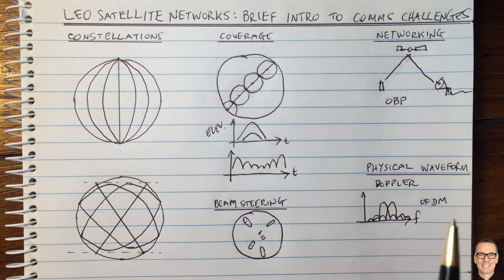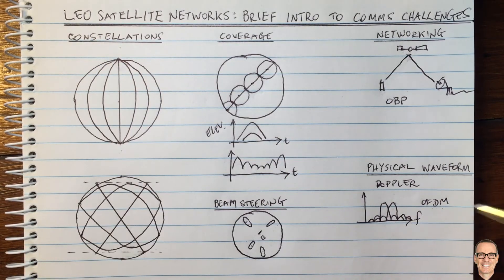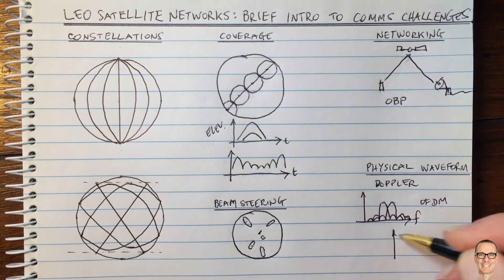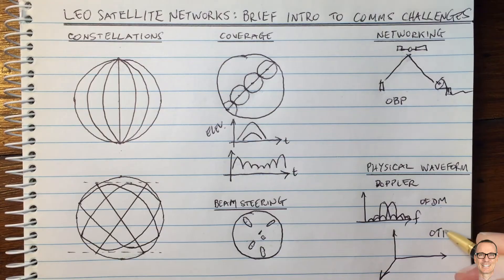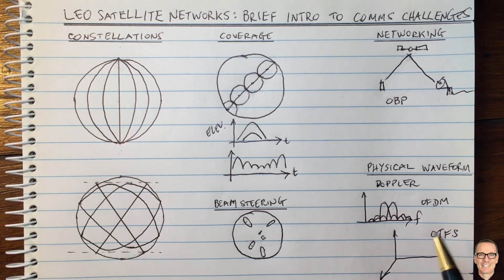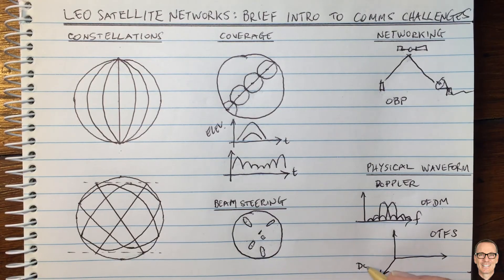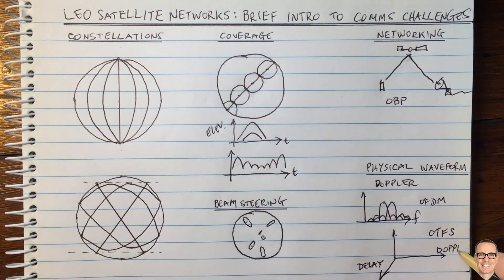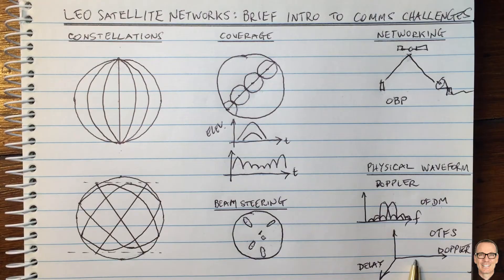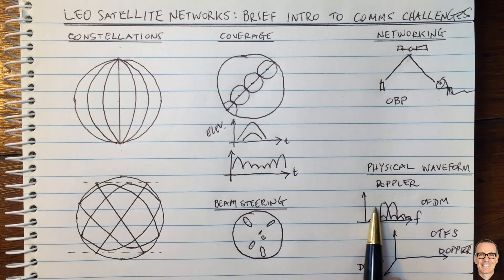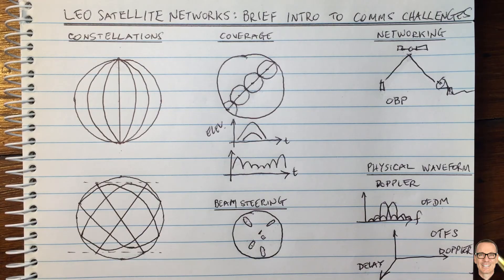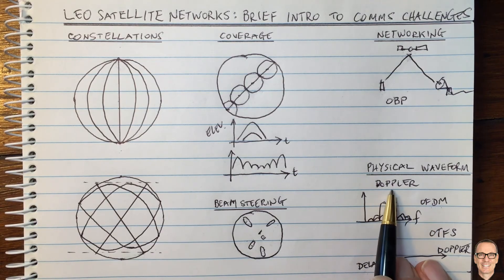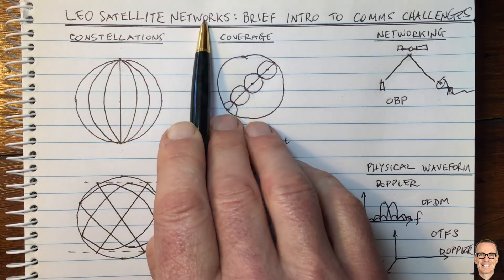OFDM is a problem when you have multiple paths, and you're going to tend to have these in LEO satellites when you didn't have them in geostationary. One potential new and exciting waveform is called Orthogonal Time-Frequency Space, or OTFS. In this case, instead of working in the time and frequency domain, you translate into a delay and Doppler domain. In the Doppler domain, the Doppler is relatively constant — certainly in comparison to the frequency domain where the channel changes. The delay of those paths is also relatively constant on the timescales of interest. So a waveform in the delay-Doppler domain can be ideally suited to high Doppler scenarios, particularly for LEO satellite communication networks.